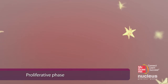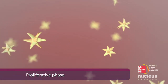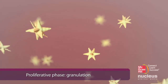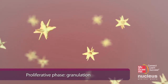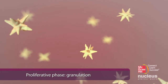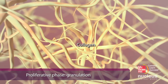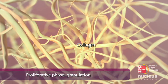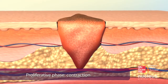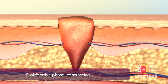The proliferative phase begins two days to three weeks after injury. The first step in the proliferative phase is granulation. Connective tissue cells, called fibroblasts, lay a matrix of collagen that reinforces the wound and provides structure for other cells. Collagen then contracts to pull together the margins of the wound.